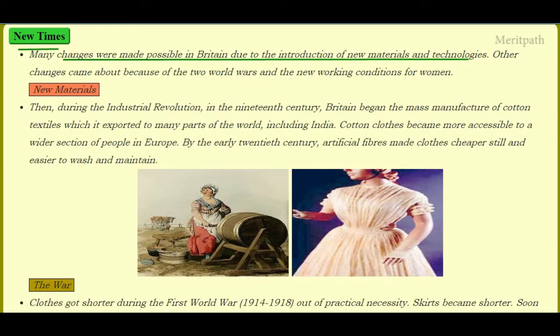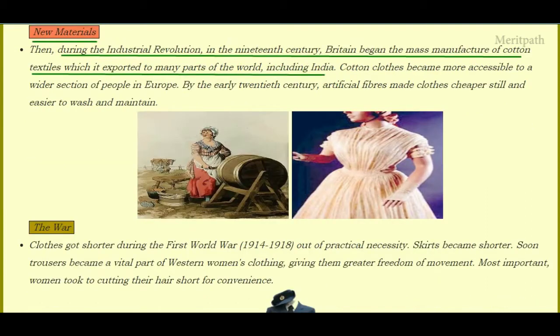Changes were made possible in Britain due to the introduction of new materials and technologies. Other changes also came about because of two world wars and new working conditions for women. During the industrial revolution in the 19th century, Britain began mass manufacturing of cotton textiles and exported cotton to many parts of the world, including India. Cotton clothes became more accessible to a wide section of people in Europe.